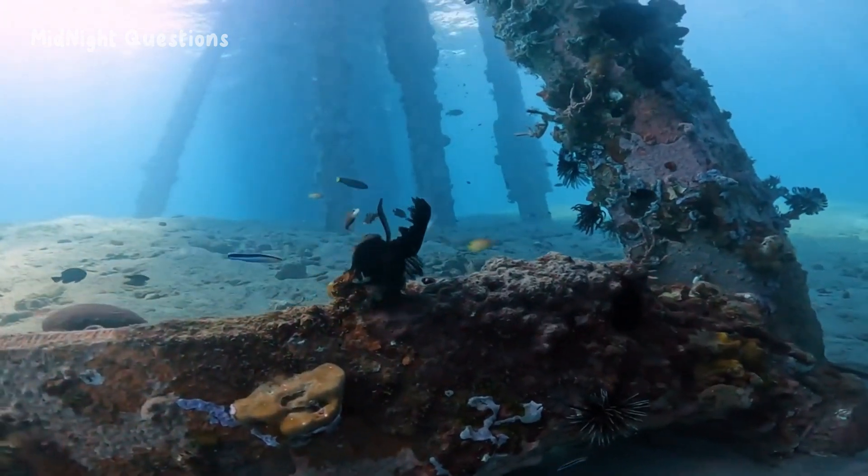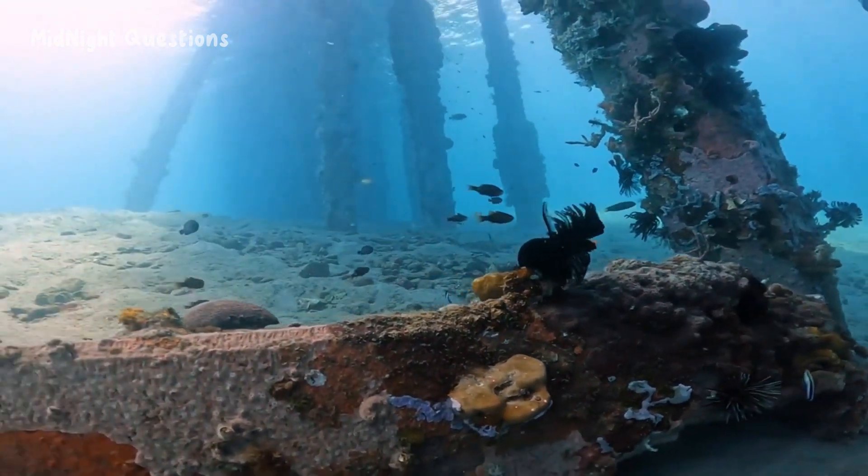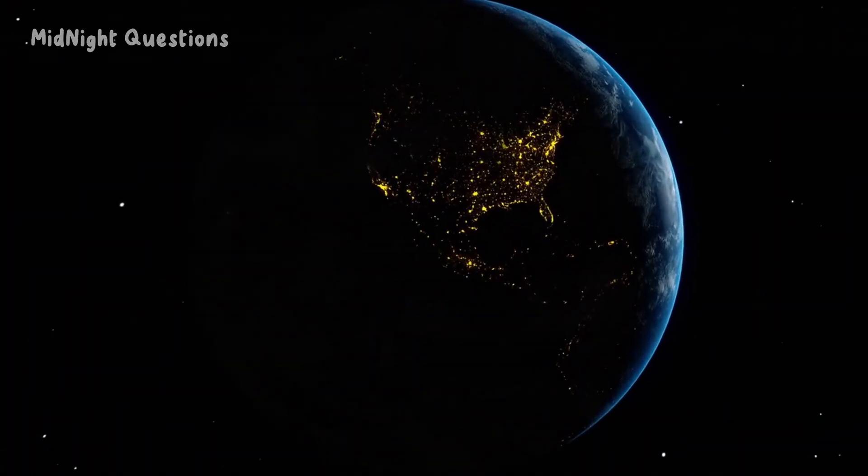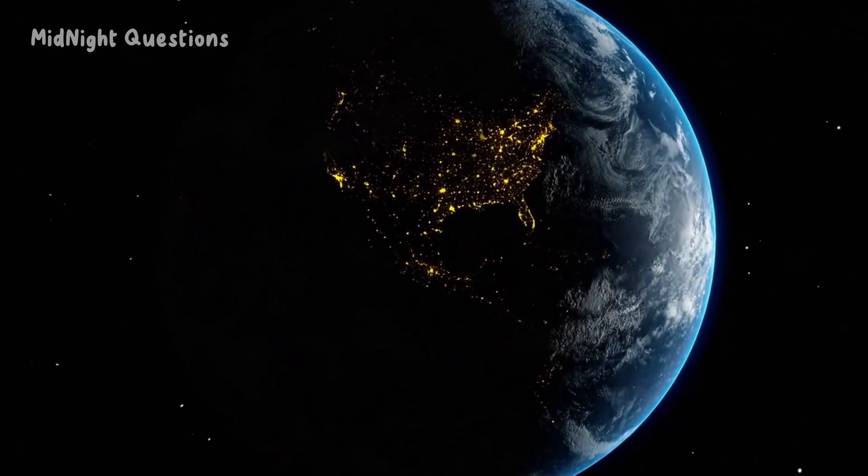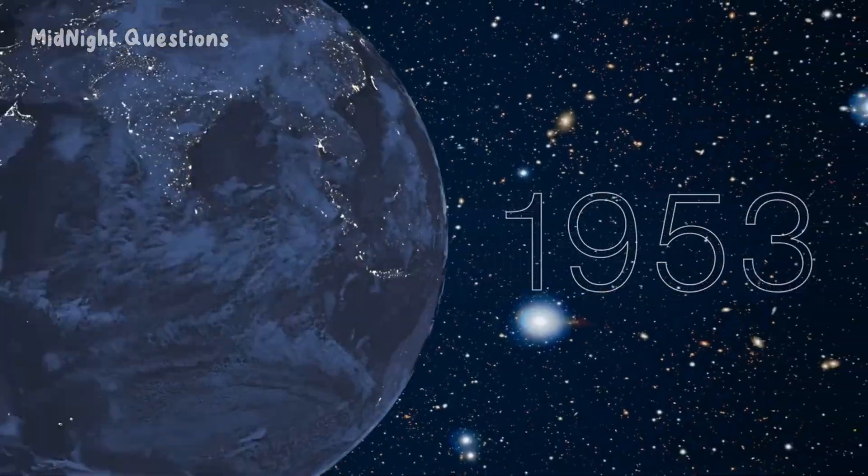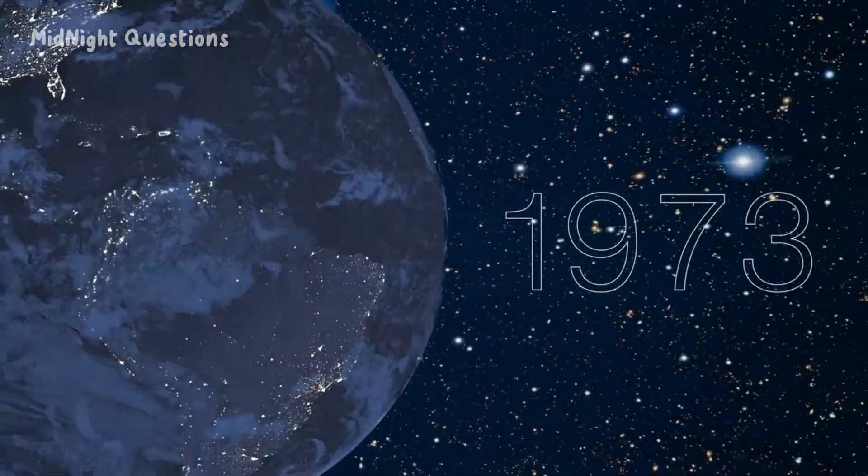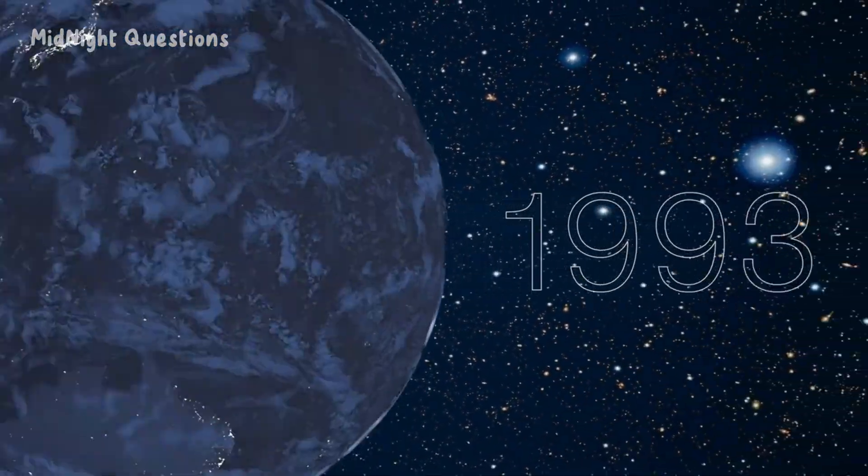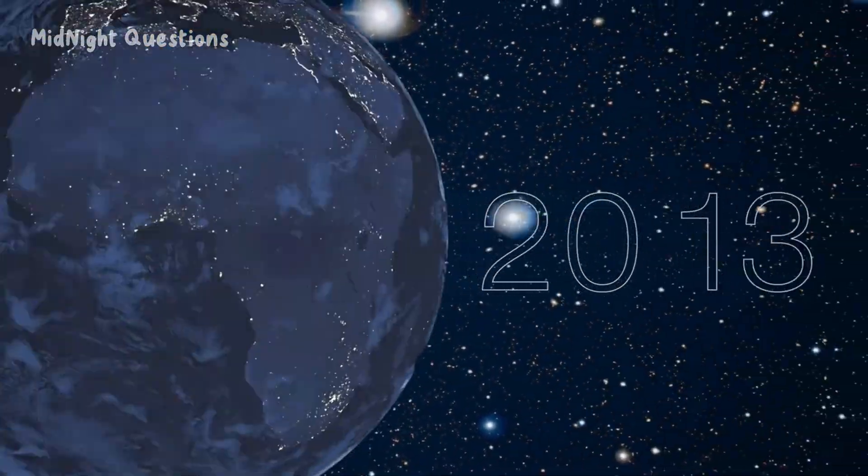Another possibility is that existing species could evolve into new ones. This could happen through a process called divergent evolution, in which a single species splits into two or more different species over time. As the planet changes, different groups of organisms might be subjected to different selective pressures, leading to divergent evolution.